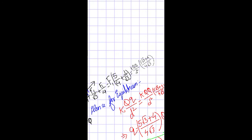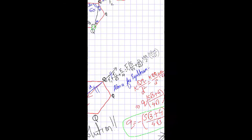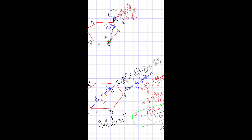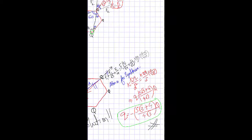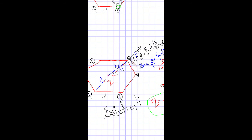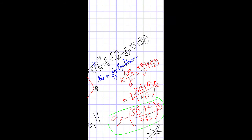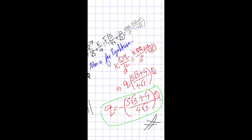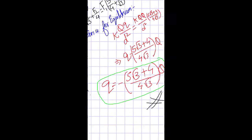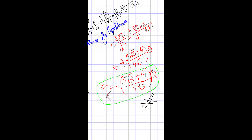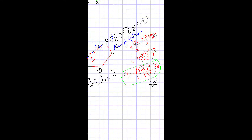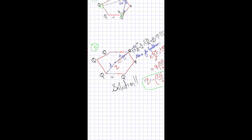Substituting f1 = kqq/d², the total outward force simplifies to kqq/d² · (5√3 + 4)/(4√3). For equilibrium, this must equal the attractive inward force from the center charge Q, which is kqQ/d². Solving, we get the center charge Q = −(5√3 + 4)/(4√3) · q. Taking sign into consideration, Q = −q·(5√3 + 4)/(4√3). This is the solution to the problem.